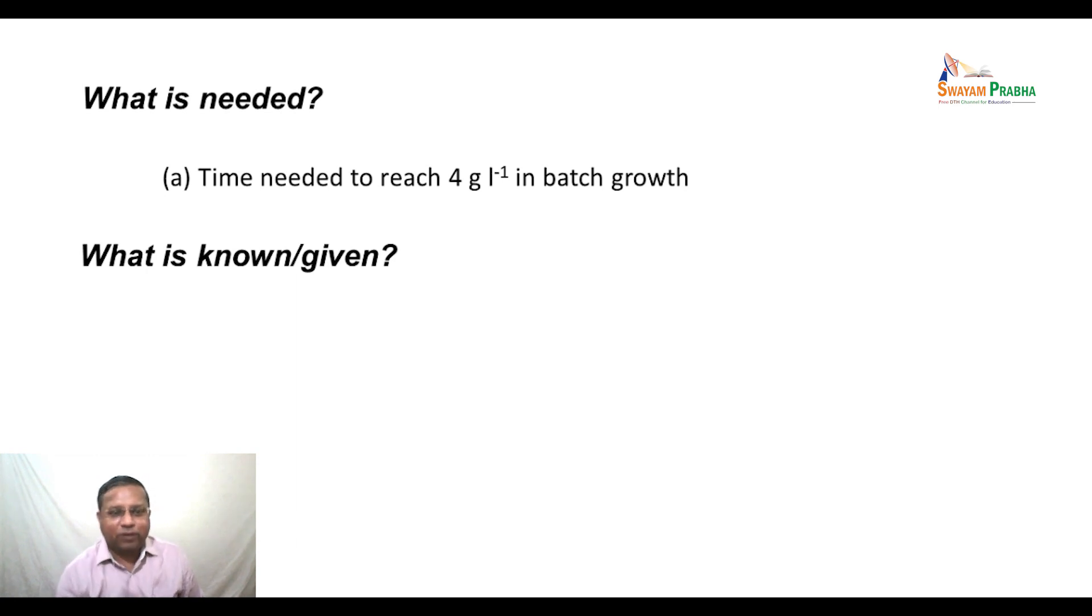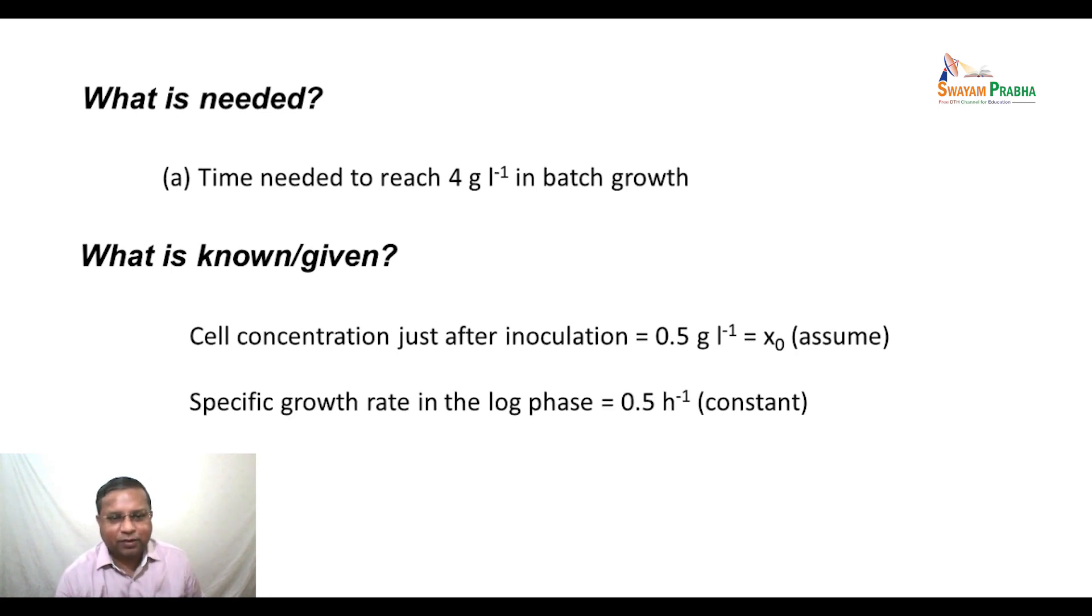What is known or given? The cell concentration just after inoculation is 0.5 gram per liter. Therefore, that can be taken to be x₀. We are assuming that there is not much change in cell concentration during the lag phase. Therefore, x₀, the cell concentration at the beginning of the log phase, is also 0.5 gram per liter. The specific growth rate in the log phase is given as 0.5 hour inverse, which we are taking as a constant.